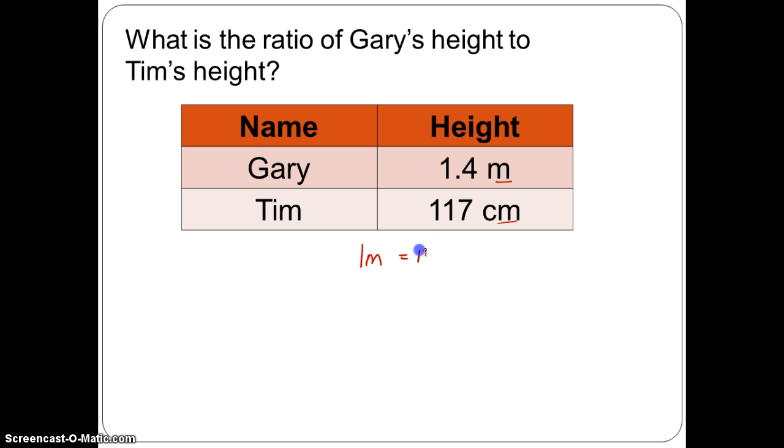So therefore 1 meter is 100 centimeter. 1.5 meter which is Gary's height would be 1.5 times 100 and equals 140 centimeter. So now I know Gary is 140 centimeter, Tim is 117 centimeter. We can now find the ratio of Gary's height to Tim's height. So Gary's height is 140 and Tim's height is 117. We do not have to put in the CM because both are in the same unit of measurement.